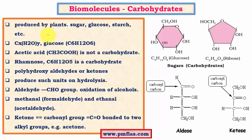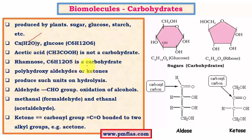Carbohydrates are mainly produced by plants. Simple examples are sugar, glucose, and starch. There is a general formula for carbohydrates — for example, glucose fits into this formula. However, certain compounds like acetic acid fit the formula but are not carbohydrates, and certain molecules like rhamnose don't fit the general formula but are still carbohydrates. Remember these as exceptional cases.